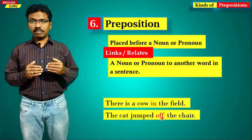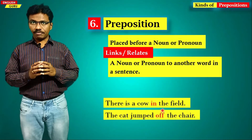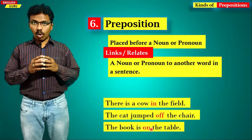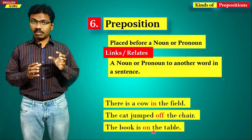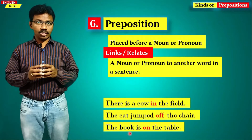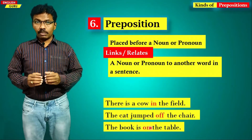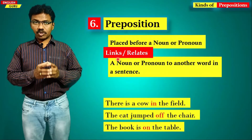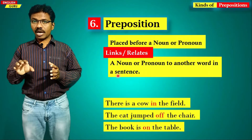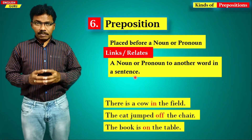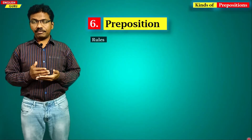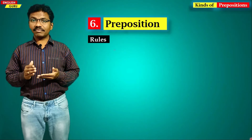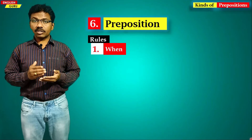In a similar way, 'the cat jumped off the chair' — so 'off' is a preposition. And 'the book is on the table' — 'on' is connecting the book and the table, so 'on' is a preposition. Prepositions connect a noun or a pronoun in a sentence to the other words of a sentence. Prepositions are normally placed before a noun or a pronoun, but sometimes they are placed at the end of a sentence.